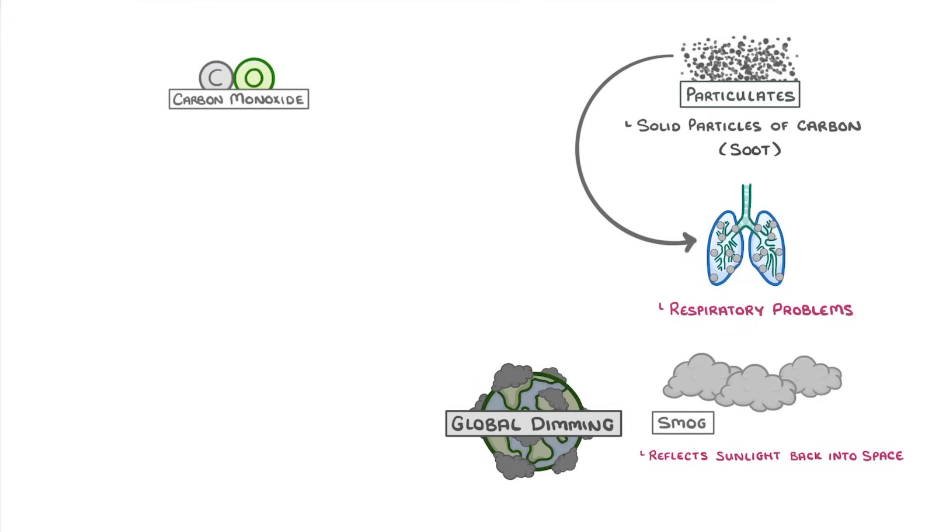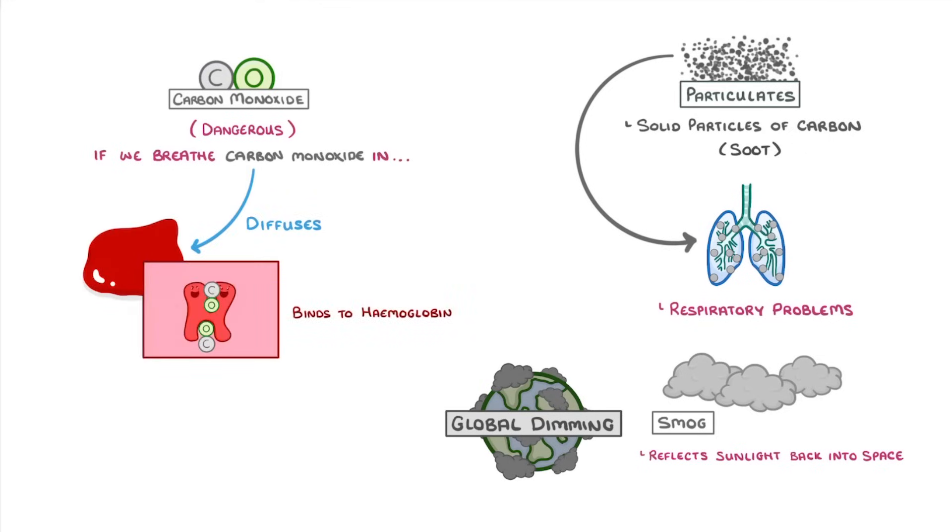Carbon monoxide on the other hand is dangerous for one very specific reason. If we breathe carbon monoxide in from the air, it diffuses into our blood and binds to our haemoglobin, in the same place that oxygen binds. This means that our haemoglobin can carry less oxygen, and so less oxygen gets transported around the body.